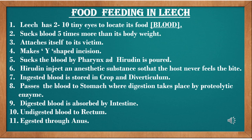The ingested blood is stored in the crop and diverticulum. The crop is the largest area, with ten crop chambers, and from each crop chamber a small tube called a diverticulum arises. After storage, blood passes to the stomach where digestion takes place with the help of a proteolytic enzyme. The digested blood is absorbed by the intestine, undigested material passes to the rectum, and is finally ejected through the anus.